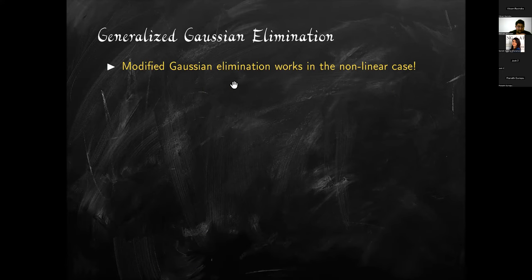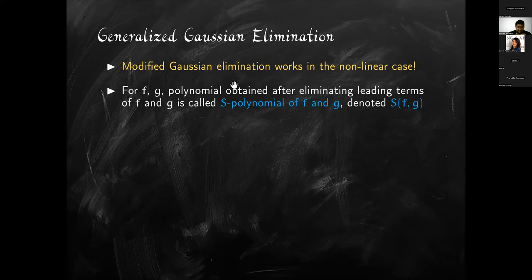An idea very similar to the core of Gaussian elimination worked for a pair of non-linear equations, and Gaussian elimination can indeed be generalized to any system of polynomials. Given polynomials F and G, the polynomial obtained after eliminating their leading terms is called the S-polynomial of F and G, denoted S(F, G). It's a notation worth remembering.